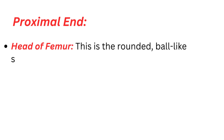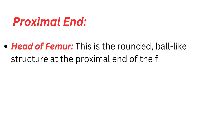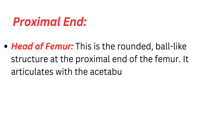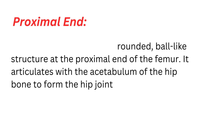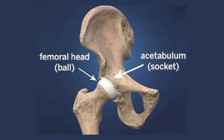Proximal End. Head of femur: this is the rounded, ball-like structure at the proximal end of the femur. It articulates with the acetabulum of the hip bone to form the hip joint.